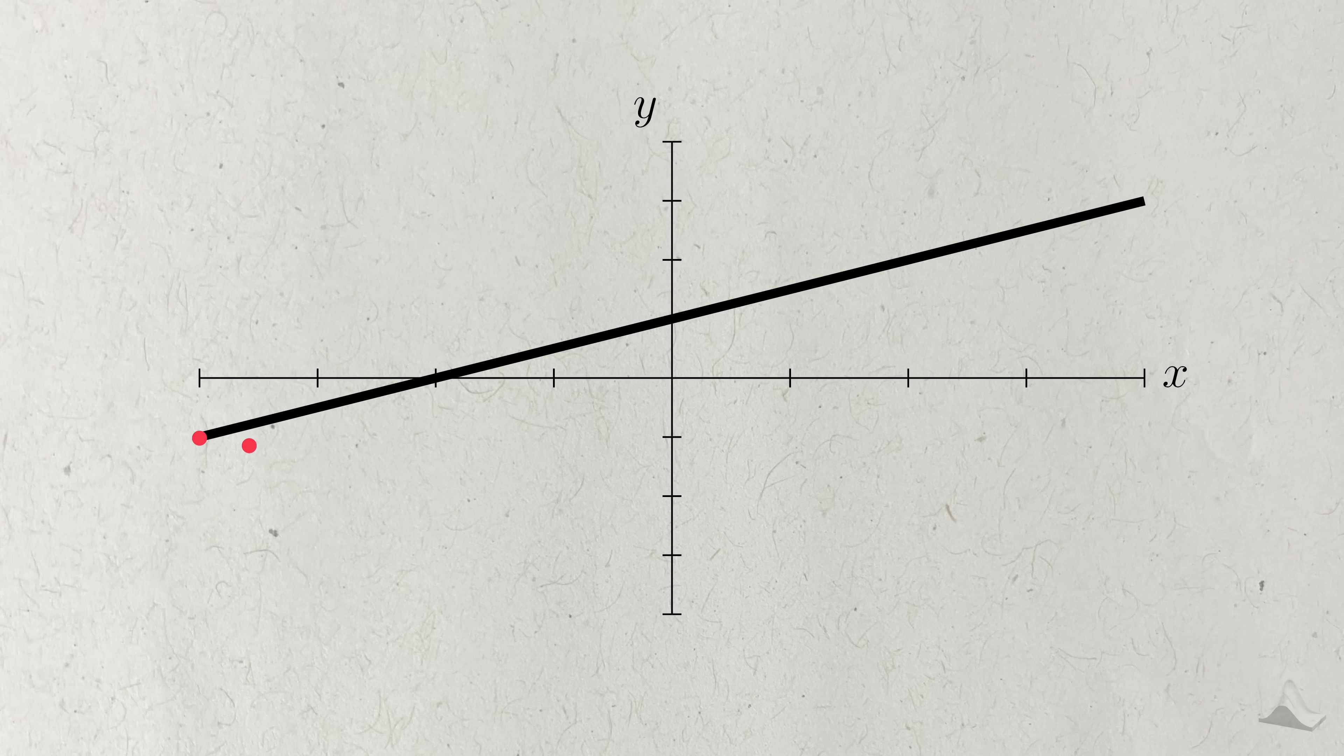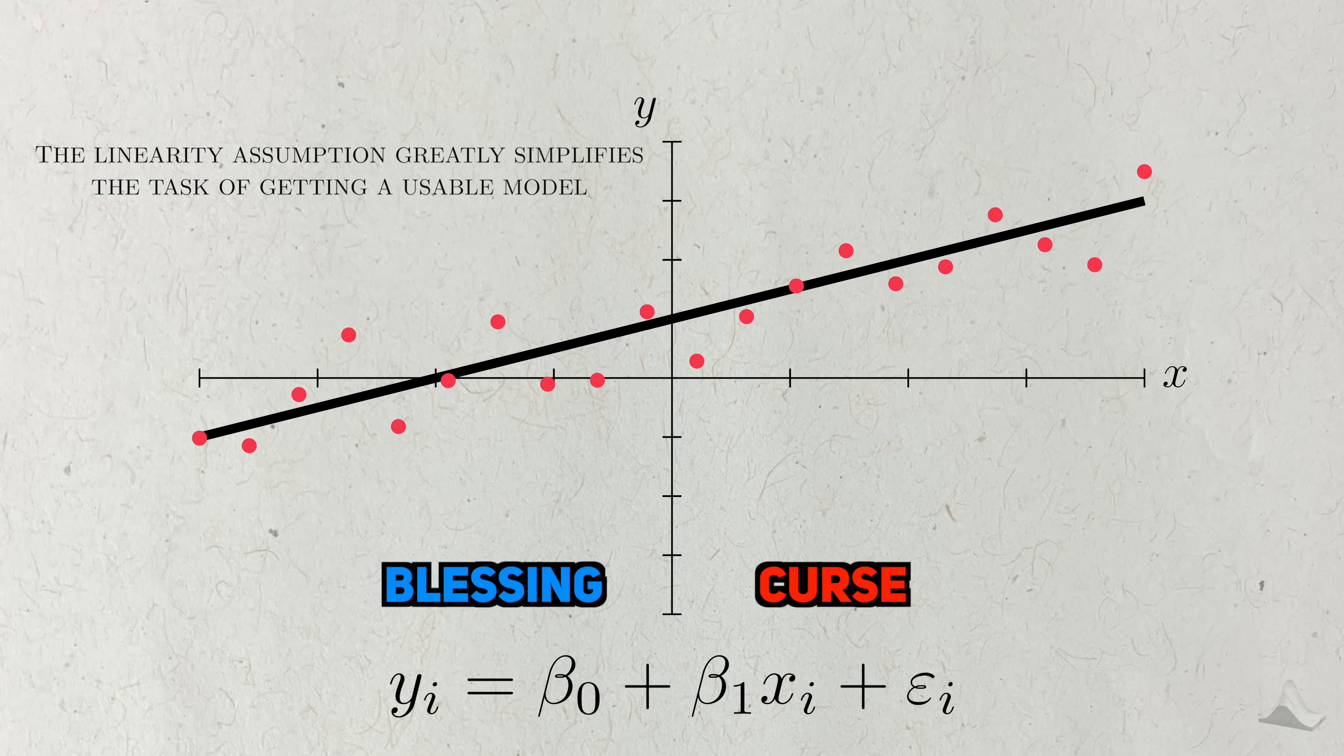If you've been following my channel for a while, you've already seen a special case of this model: linear regression. This model simplifies the relationship because it can be summarized with just a few numbers, the regression coefficients. Once we estimate these coefficients, we have the whole function and we can start making predictions. But the simplification is both a blessing and a curse.